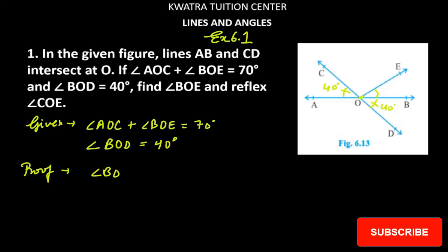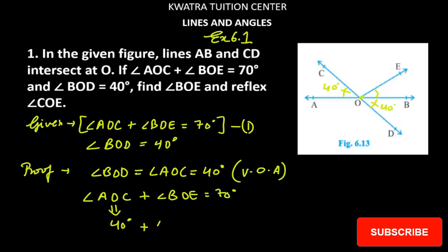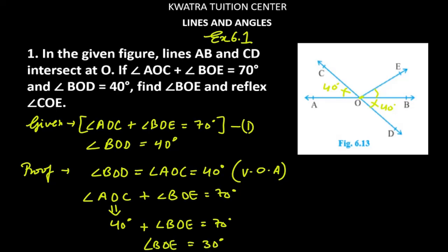Angle BOD is equal to angle AOC, it equals 40 degrees. You will mention that this is a vertically opposite angle. If you have angle AOC value now, can we find angle BOE? So the answer is yes. You can easily find. So angle AOC plus angle BOE is equal to 70 degrees. And what will you place in angle AOC? 40 degrees. So 40 degrees plus angle BOE is equal to 70. And angle BOE is 70 minus 40 which is 30. Angle BOE is 30 degrees.